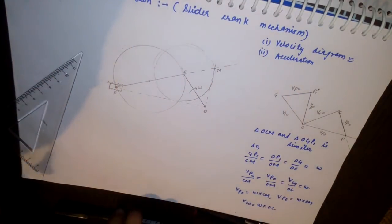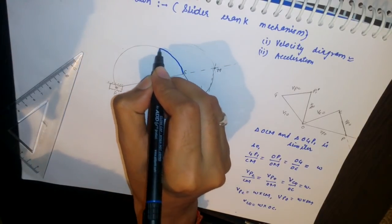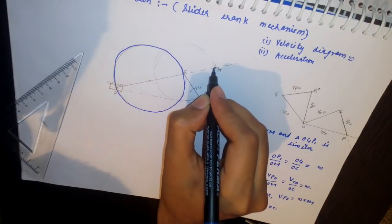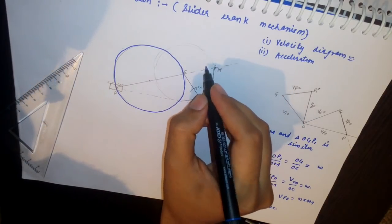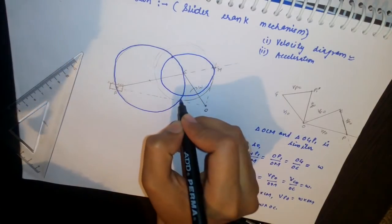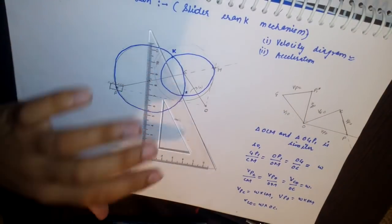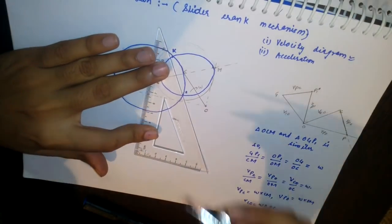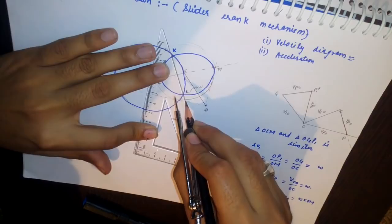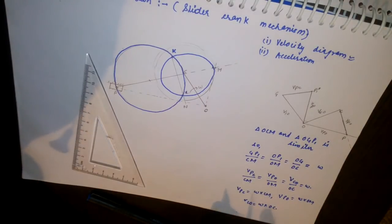We draw the first circle and the second circle. Now we take the intersecting points of the two circles — let's call them K and L. We then join the points K and L, and extend the line KL to cut the line PO at point N. This gives us the key points needed for the acceleration diagram.